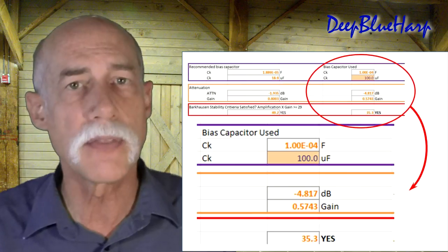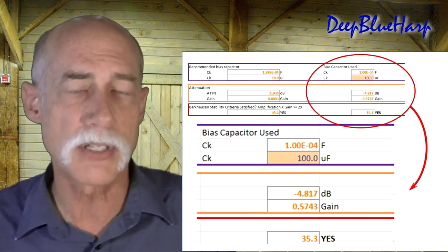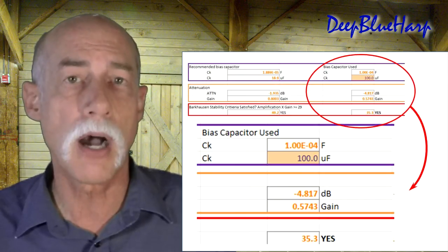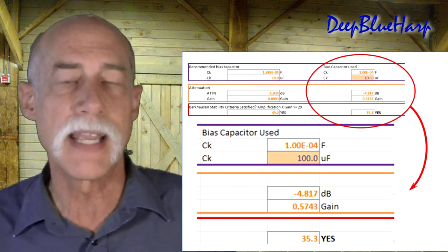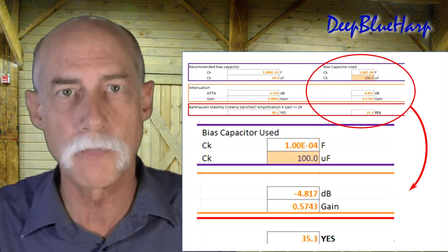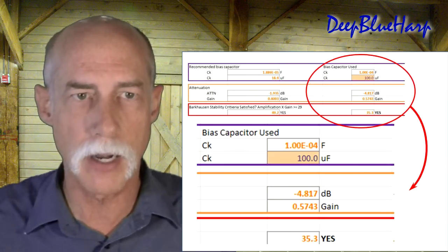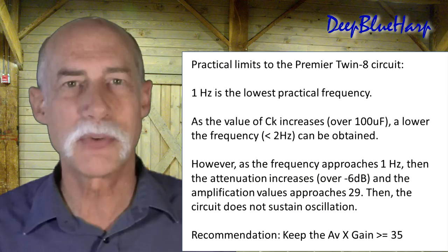You can put 150 in there which helps sustain a lower frequency oscillation but it will come at a cost. As soon as you approach 150 or 170 microfarads, the gain goes to 6 dB and it drops me below, drops me straight down to 29. It may not oscillate. So there are practical limits to the premier 28 circuit.